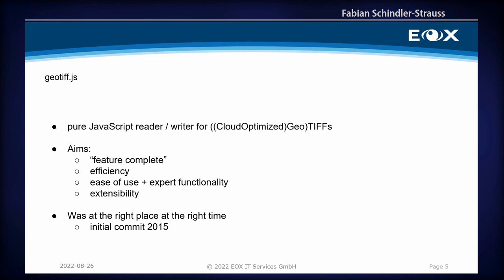geotiff.js also aims for efficiency — I come from a computer science background, so efficiency is very close to my heart. There's also a great deal of ease of use; I want to make it open and easy for anyone to use. But I also provide what I call expert functionality — functions for expert users who really want to exploit it and get the best performance and information out of their images. It also aims to be extensible. Compression can be provided as plug-ins. Pull requests are welcome.